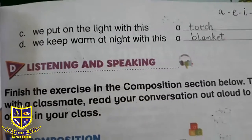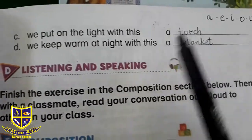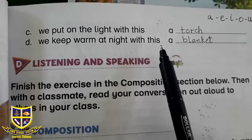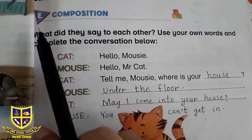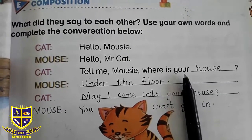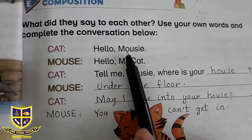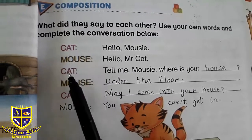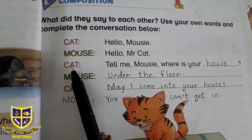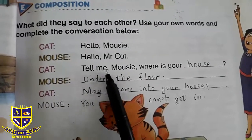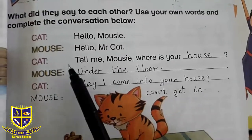Number three: 'We put on the light with this' — ہم کس سے light on کرتے ہیں — وہ ہے 'torch.' Number four: 'We keep warm at night with this' — سردیوں میں رات کو ہم کیا اوڑھتے ہیں — وہ ہے 'blanket' یعنی کمبل۔ اب ہم چلیں گے Exercise E کی طرف — اس میں poem سے تین statements کو complete کرنا ہے۔ Cat کہتی ہے 'Hello mouse' اور mouse کہتا ہے 'Hello cat.' پھر cat کہتی ہے 'Tell me mouse, where is your house?'